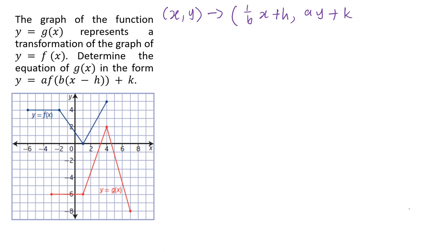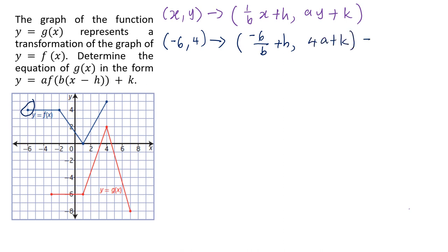For example, the point (-6, 4) can be transformed into (-6/b + h, 4a + k), and this is equal to its image, which is in the third quadrant: (-3, -6).